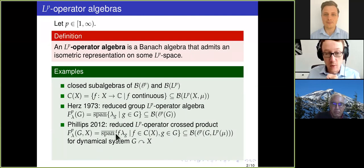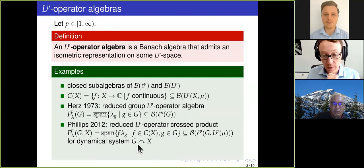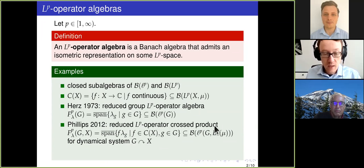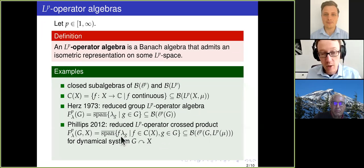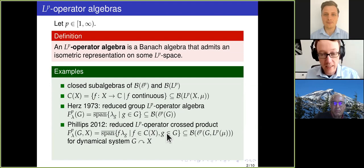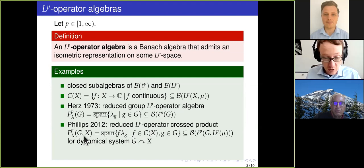We can go one step further, and this was done by Chris Phillips in 2012. We can associate to a dynamical system of a group G acting on a compact Hausdorff space X an LP operator algebra called the cross product, with notation FP_lambda(G, X). This is a Banach algebra with a representation on some LP space, built out of multiplication operators from C(X) and translation operators of G that interact in a way encoded by the action.